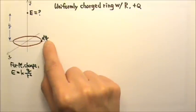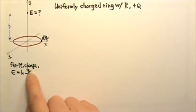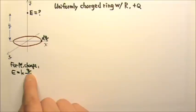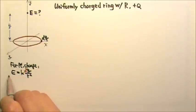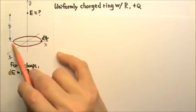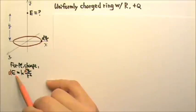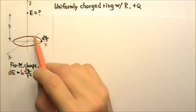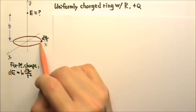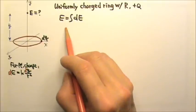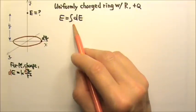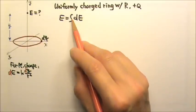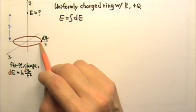This little bit of charge dq is our point charge producing the field. A little bit of charge gives us a little bit of electric field dE. To find the total electric field from the ring, we find the dE produced by every bit of dq on the ring and then add them together. This means the electric field E equals the integral of dE — to integrate means to add, so we're adding all of the dEs produced by all of the dqs on the ring.